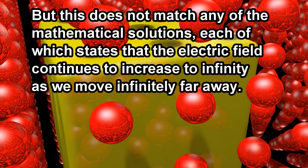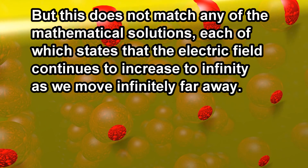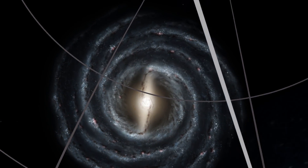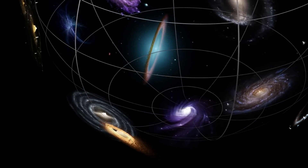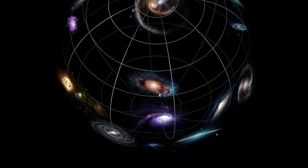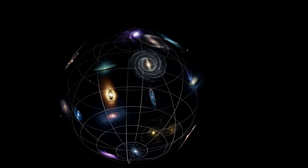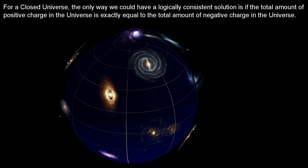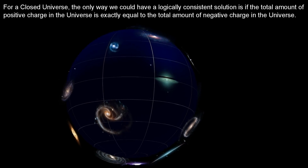But this does not match any of the mathematical solutions, each of which states that the electric field continues to increase to infinity as we move infinitely far away. And this is assuming that we actually have an infinite space. If we have a closed universe, where space-time completely wraps around on itself, then the scenario of a uniform positive charge density has no mathematical solution at all. For a closed universe, the only way we could have a logically consistent solution is if the total amount of positive charge in the universe is exactly equal to the total amount of negative charge in the universe.